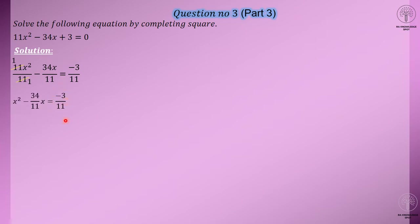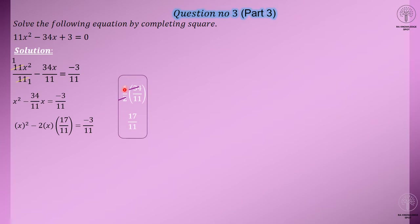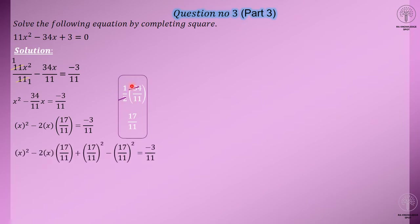Now students, the technique I told you: to find the middle number, you write half multiplied by the number written with x. The number written with x is 34 by 11. After taking half of that — 2 ones are 2, 2 sevens are 14 — you will get 17 by 11.